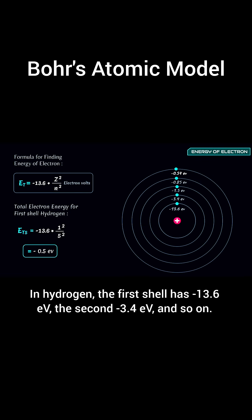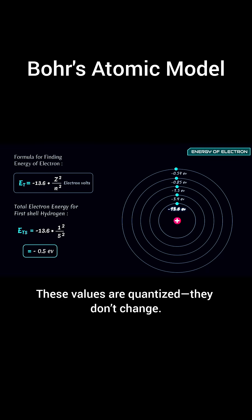In hydrogen, the first shell has minus 13.6 eV, the second minus 3.4 eV, and so on. These values are quantized, they don't change.